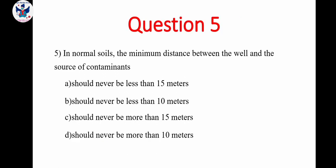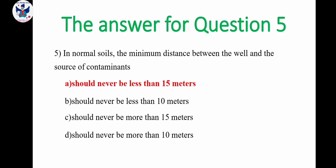So next question number 5. In normal soil, the minimum distance between the well and the source of contaminants. A. Should never be less than 15 meters. Should never be less than 10 meters. Should never be more than 15 meters. So here the correct answer is option A. It should never be less than 15 meters.